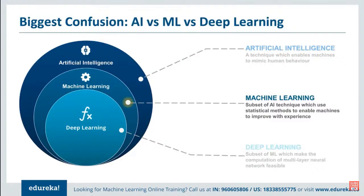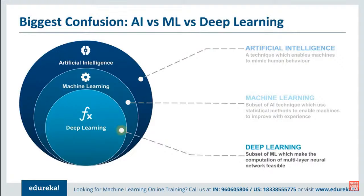Now coming to deep learning: deep learning is a subset of machine learning where similar machine learning algorithms are used to train deep neural networks, so as to achieve better accuracy in those cases where machine learning was not performing up to the mark. I hope you now understand that machine learning, AI, and deep learning are all three different concepts.